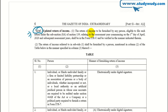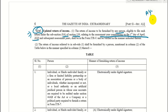Many persons were confused about when the updated return applies. It is applicable for the assessment year commencing on the first day of April 2020, meaning Assessment Year 2020-21, which corresponds to Financial Year 2019-20.